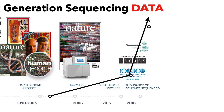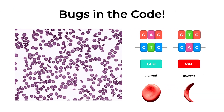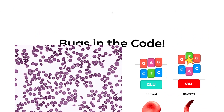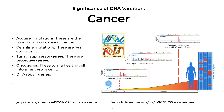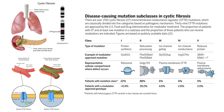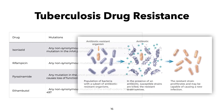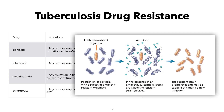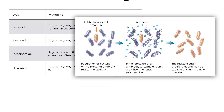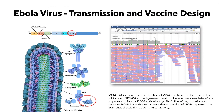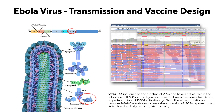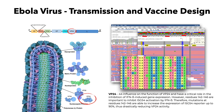These include examples from genetic diseases like sickle cell anemia, somatic mutations in cancer, DNA variation in cystic fibrosis, as well as mutations responsible for the acquisition of drug-resistant strains in tuberculosis, and viral protein analysis for vaccine design.